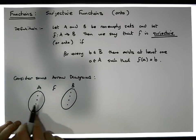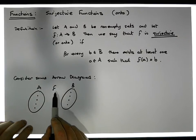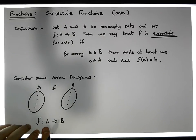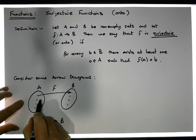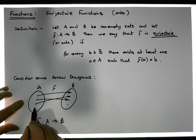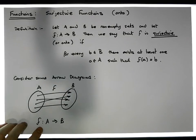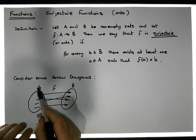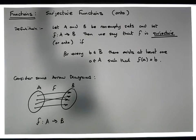We have a function f mapping values from the domain — the whole set A — into the codomain, set B. By definition of a function, it must take every value from A into B, so every element in A must map to some element in B. Also, we can never have two arrows leaving a single point in the domain going to separate points in the codomain. This is a well-defined function.